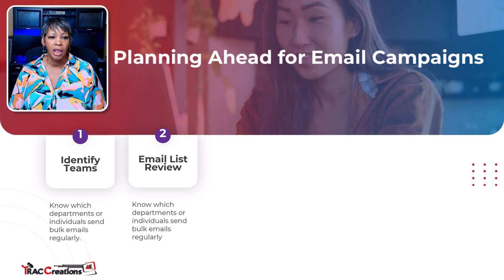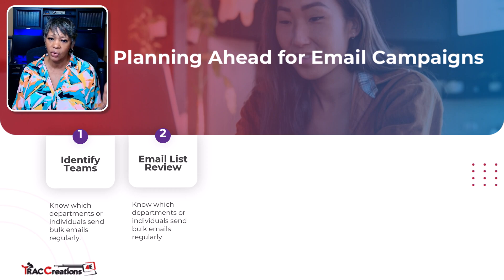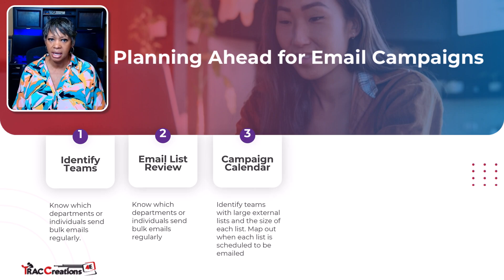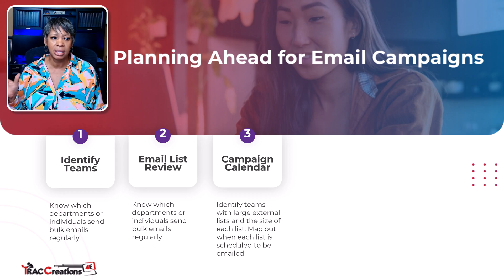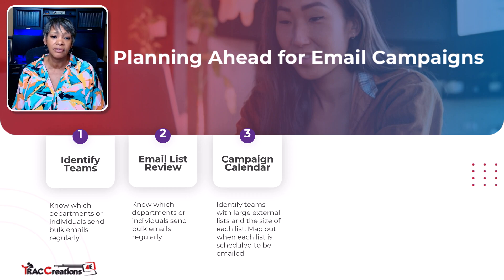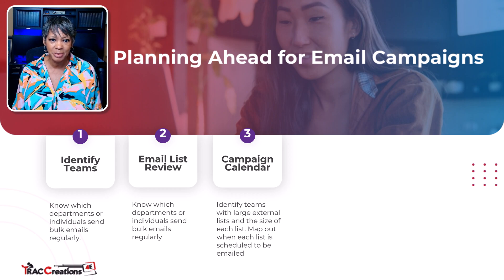Number two: review your email lists. Take a look at the actual lists being used — how many contacts are on them and how active they really are. This is an opportunity to get them up to date. Number three: create a campaign calendar. Now that you know who's sending and how large the lists are, build a shared campaign calendar that anyone can review at any time. This will reduce the risk of multiple teams sending on the same day and maxing out your limits.